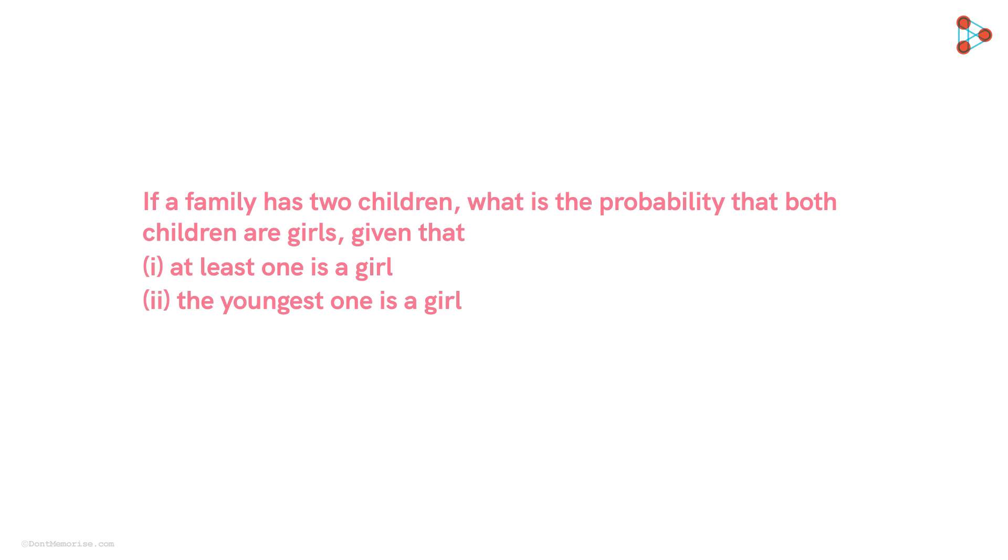Also, we have to assume that each child born is equally likely to be a boy or a girl. Now here we have to find the conditional probability for both these cases. So let's begin.